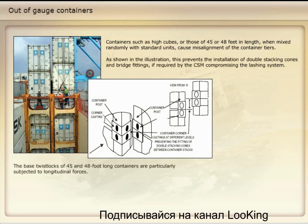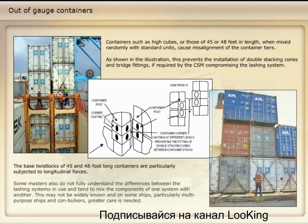The base twist locks of 45- and 48-foot long containers are particularly subjected to longitudinal forces. Some masters also do not fully understand the differences between the lashing systems in use and tend to mix the components of one system with another. This may not be widely known, and on some ships — particularly multipurpose ships and conbulkers — greater care is needed.